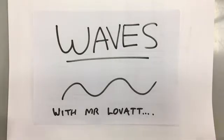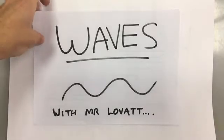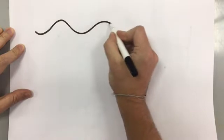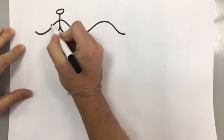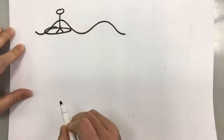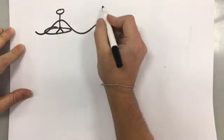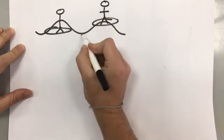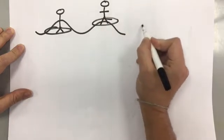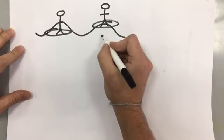This is a GCSE video on waves. Waves transfer energy. When you go to the sea and see a surfer on a wave, if they're sitting on their board not going anywhere, the surfer goes up with the wave and then down, and up again and down again, but the surfer doesn't move forward and backward.